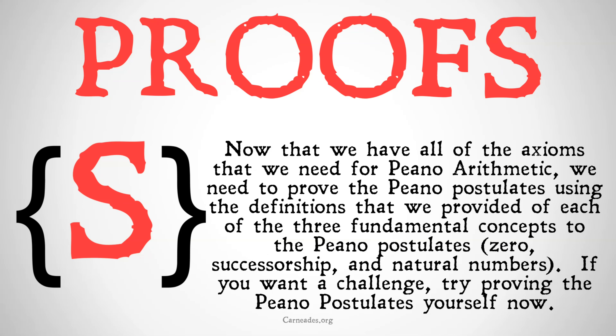Now that we have all the axioms that we need for Piano arithmetic, we need to prove the Piano postulates using the definitions we've provided of each of the three fundamental concepts: zero, successorship, and the natural numbers. If you want a challenge, try proving the Piano postulates yourself now — you have all the building blocks you need. But I will warn you, the first one is easy to do, the next couple are somewhat easy, but the fourth one is very, very hard. So you might be advised to try proving the first Piano postulate on your own, and if you want a gigantic challenge, try proving the fourth Piano postulate on your own. Best of luck! But if you just want to follow along as we talk you through it, stay tuned for the next video.